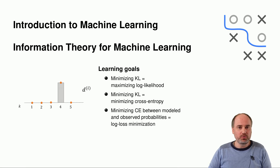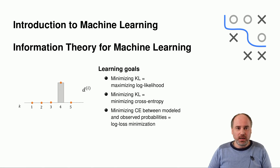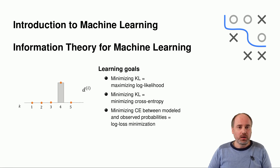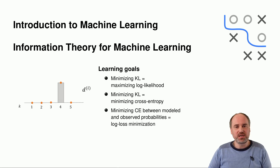What we're going to learn here is that minimizing the Kullback-Leibler divergence amounts to basically maximizing a log likelihood. It's also the same as minimizing cross entropy, and minimizing the cross entropy between modeled and observed probabilities is basically the same as log loss minimization.